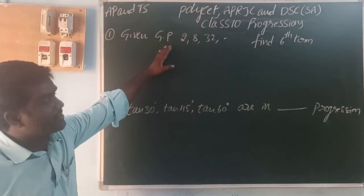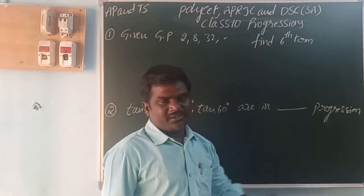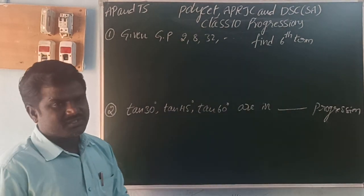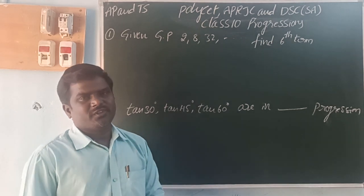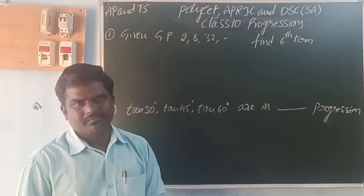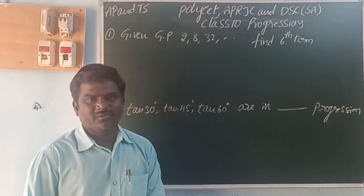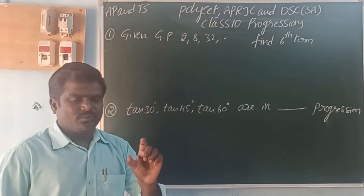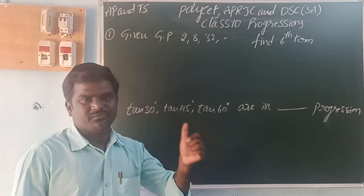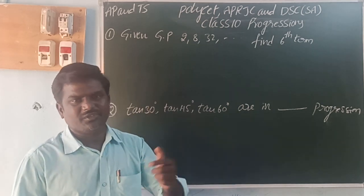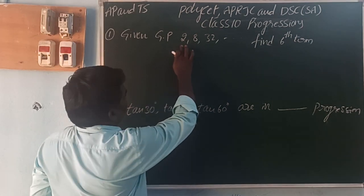Given GP 2, 8, 32 and so on, find the sixth term. Geometric progression - the common ratio between any two terms is same. That progression is called geometric progression. Even two terms median ratio same day, two constant terms.